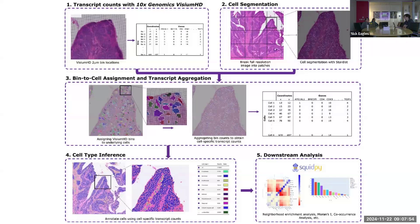This is the first and only main figure, and it outlines the whole process that this software is doing. Step one is not really a step — you basically start with Visium HD data, where you have a matrix of expression data. The columns are bins, similar to spots in standard Visium, and it's bins by genes, measured across a lot of spatial area.